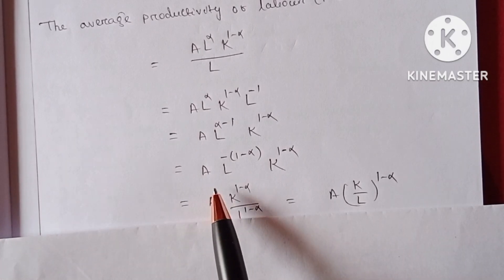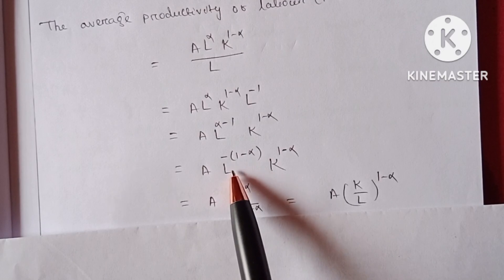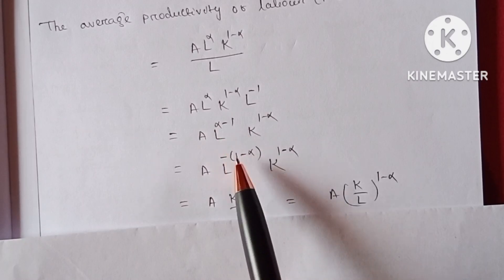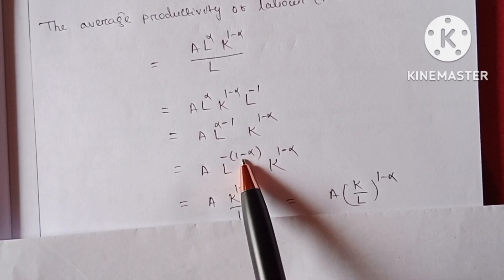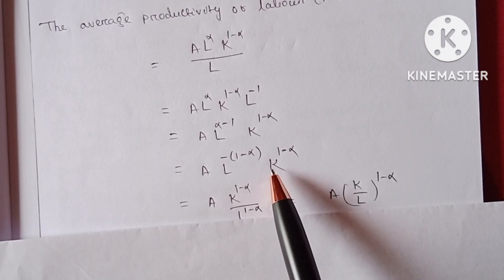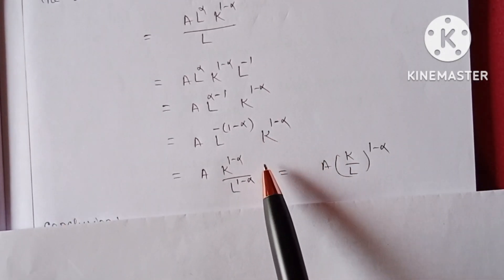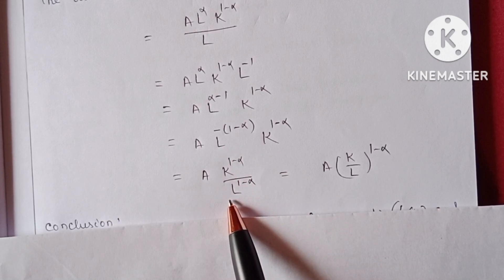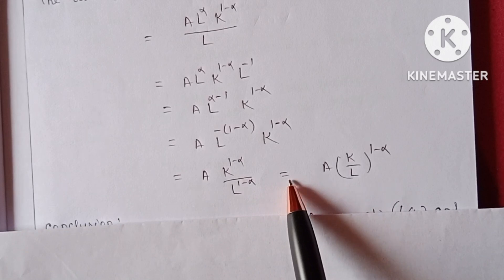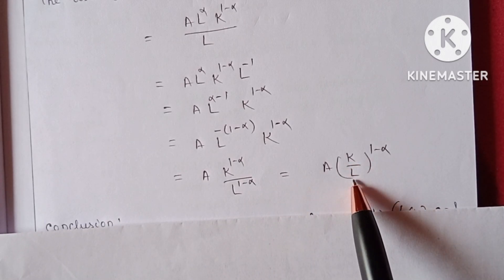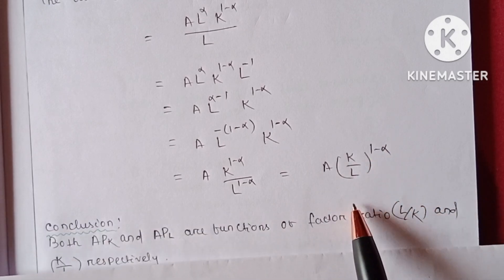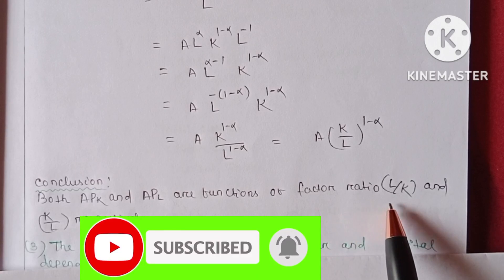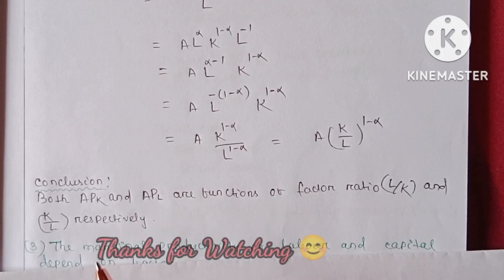Factoring out minus 1 from the exponent of L gives minus 1 into 1 minus alpha, so minus into minus gives plus alpha, and together with K to the power 1 minus alpha. Taking L into the denominator gives A into K to the power 1 minus alpha divided by L to the power 1 minus alpha, which equals A into (K/L) whole power 1 minus alpha. In conclusion, both APK and APL are functions of the factor ratio L/K and K/L respectively.